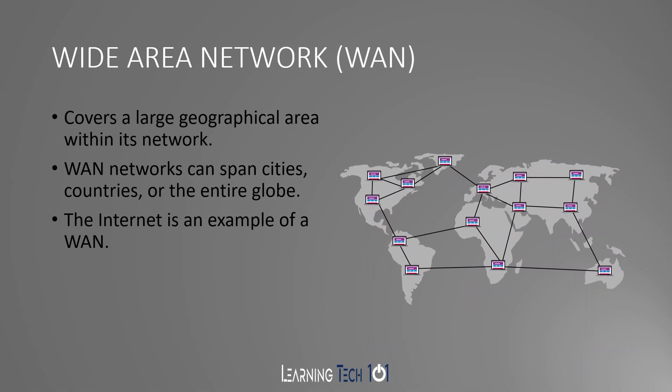Next, we have your wide area network. This covers a large geographical area — WAN networks can span cities, countries, or even the entire globe. The internet is going to be your biggest example of a wide area network. Anything you are connecting beyond city limits is now getting into a wide area network.